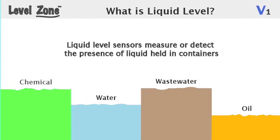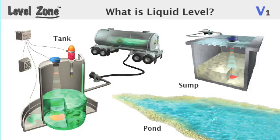Liquid level sensors measure or detect the presence of liquid held in containers. Common liquid types include chemical, water, wastewater, and oil. A level container can be anything that holds liquid, such as a tank, sump, or pond.